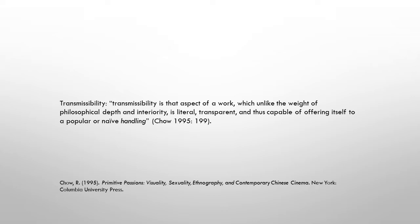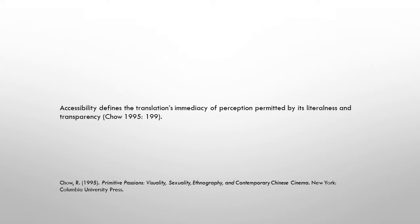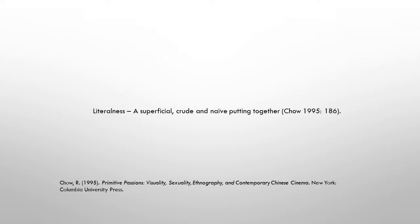More significantly, it is part of the active manner in which such cultures represent or ethnographize themselves. These terms describe the uniqueness of the visual as opposed to the verbal, and concern two distinctive features of film as the medium of translation: transmissibility and accessibility. Transmissibility refers to the aspect of a work that is literal, transparent, and thus capable of offering itself to a popular or naive handling, whereas accessibility defines the translation immediacy of perception permitted by its literalness and transparency. Literalness refers to the superficial, crude or naive, and is connected with the key notion of putting together. It is through putting together that a culture is visually translated as a fable, a meaningful interpretation of the world, enabling the audience to experience a culture by looking at it as an audiovisual construction.